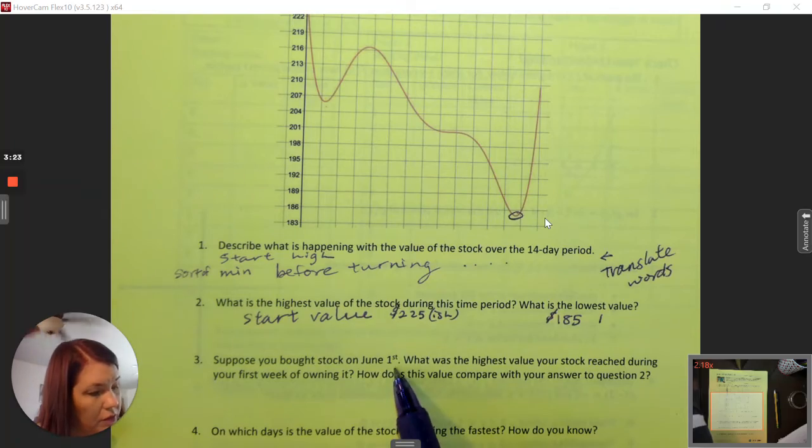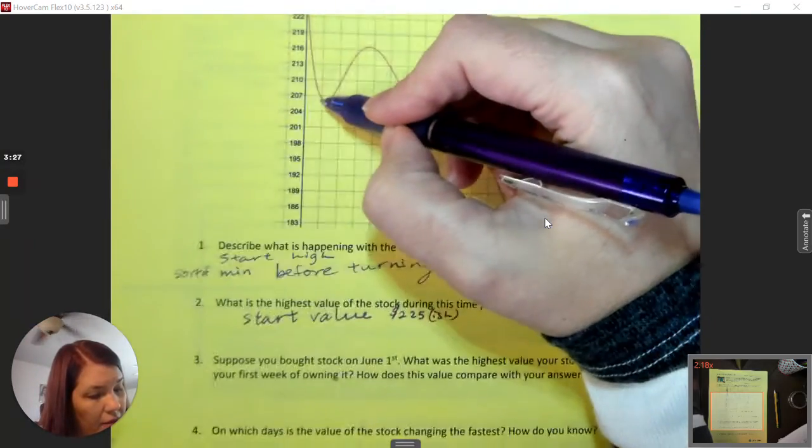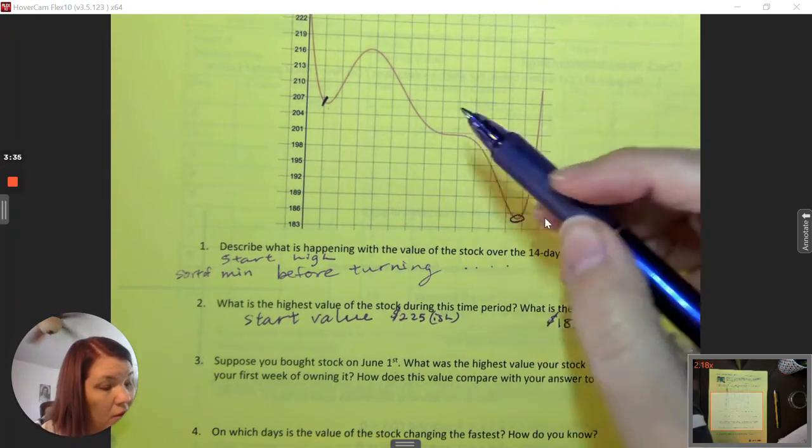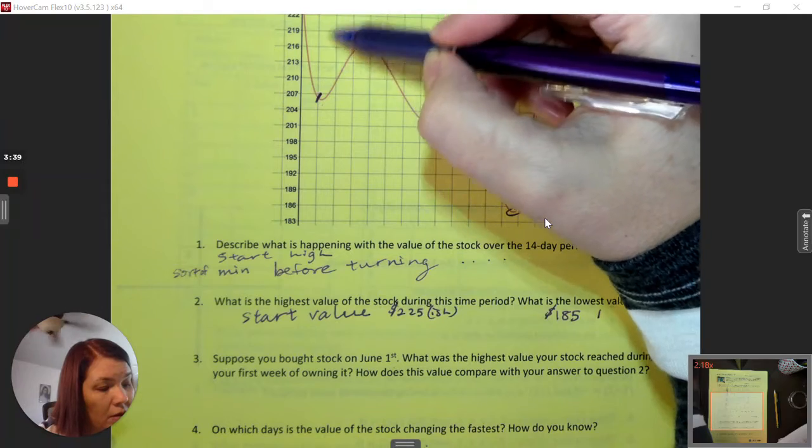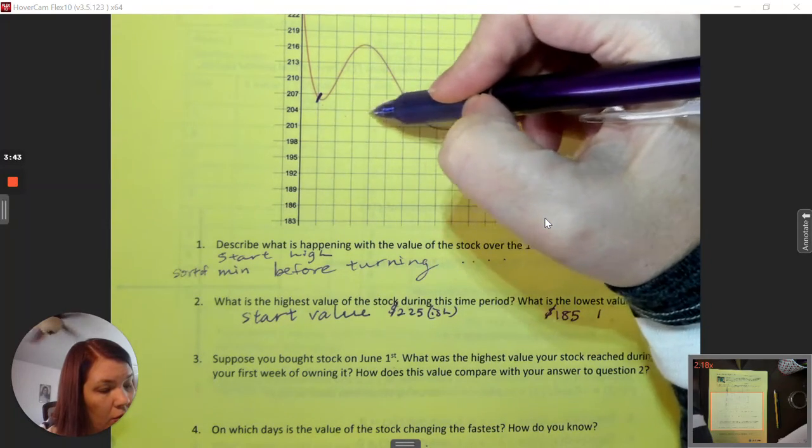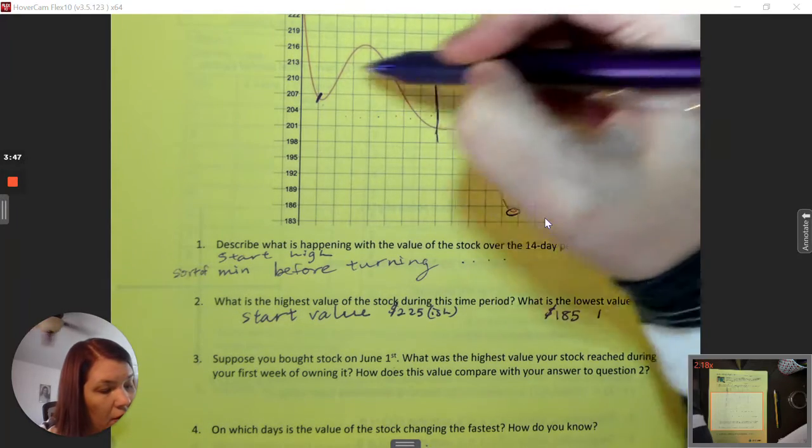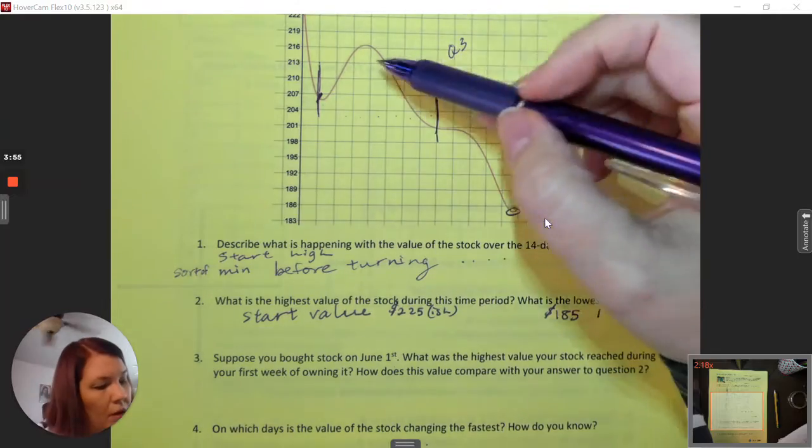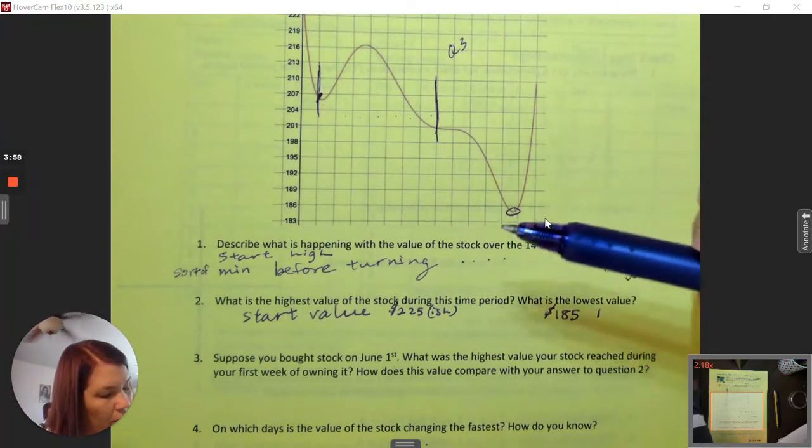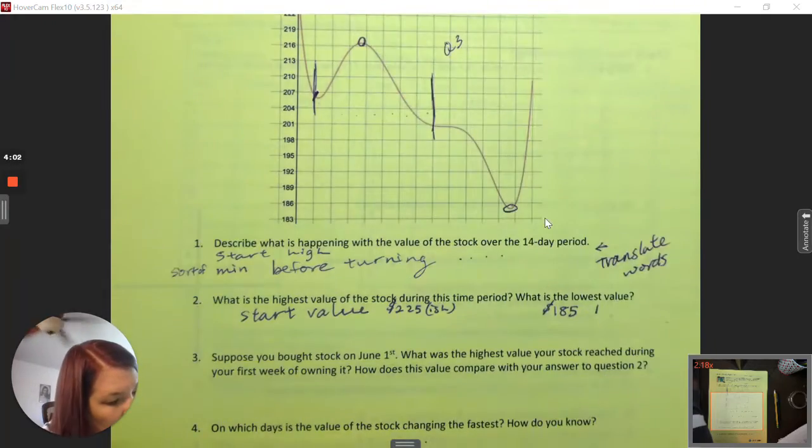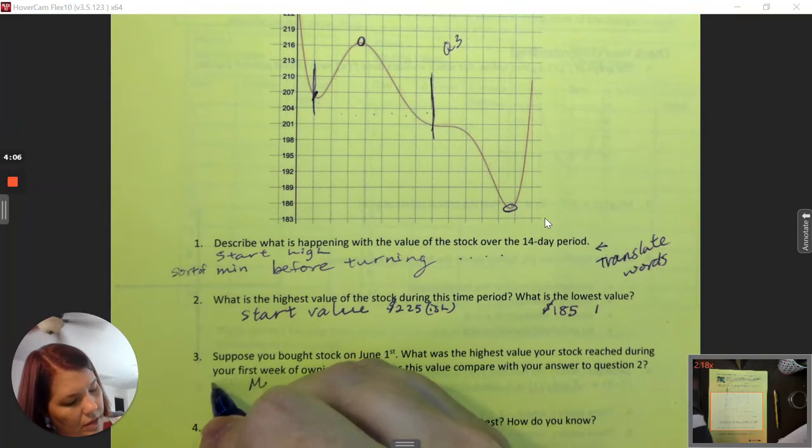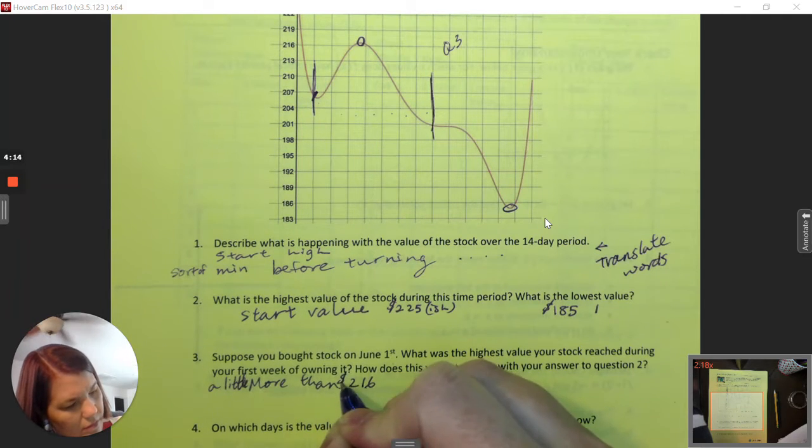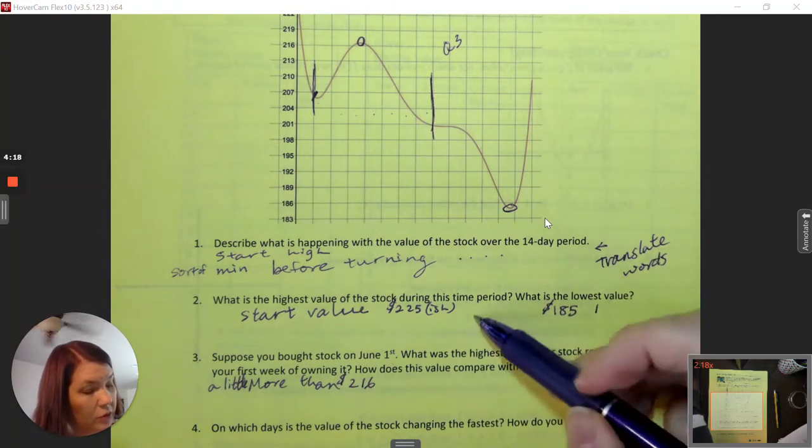Suppose you bought the stock on June 1st, so May 31st and then one day later. What is the highest value of your stock reached during your first week of owning it? So this is two weeks, each line representing a day. From here to there, that's 1, 2, 3, 4, 5, 6, 7 days. The highest value of my stock in my first week is right here, around $216, a little more than $216. How does this compare with my answer to question two? Well, it's lower.